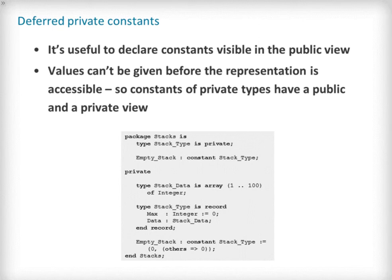A very powerful feature of private types is the ability to declare deferred private constants of any private type. Constants declared as deferred have a public view and a private view. The public view allows assignment and comparison implicit primitive operations to be used, which are particularly useful for providing default values of any private type. Here we see a classic example of using a deferred constant to signify an empty stack which is made available to the package user for comparison or assignment.